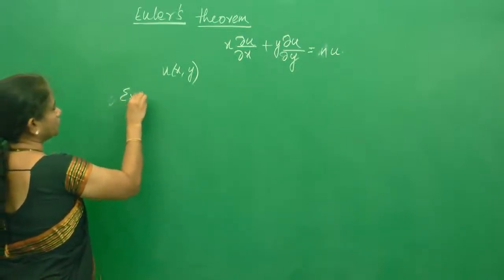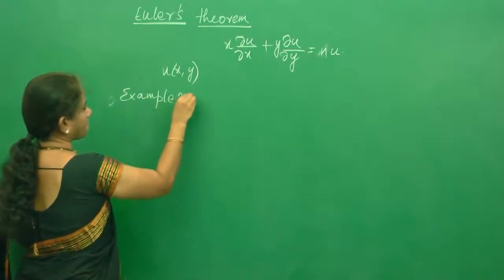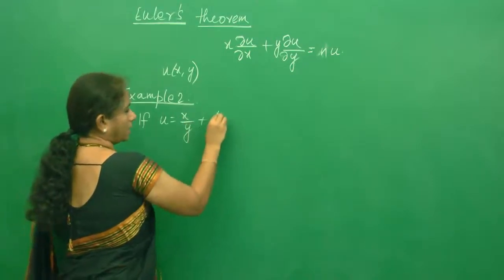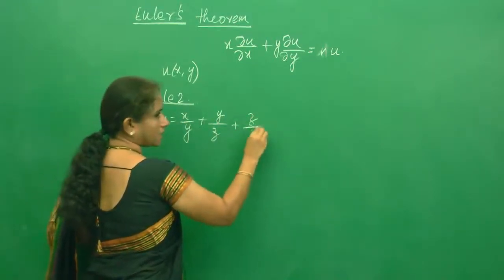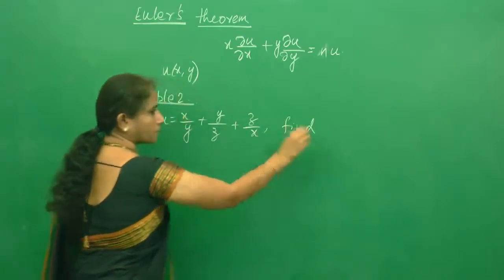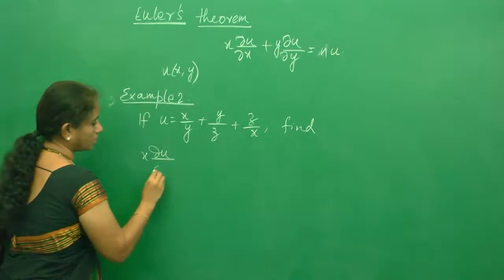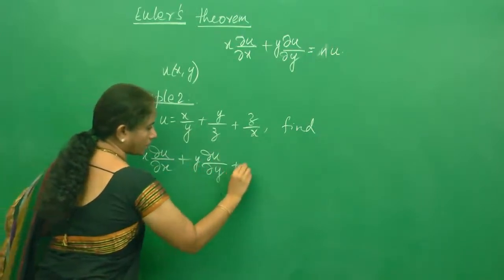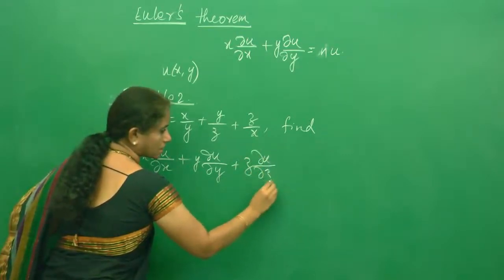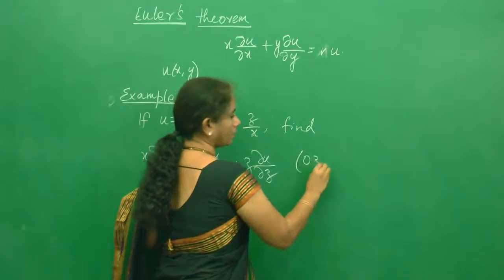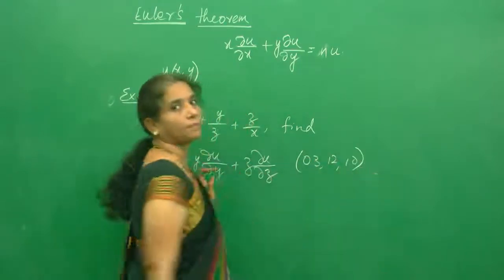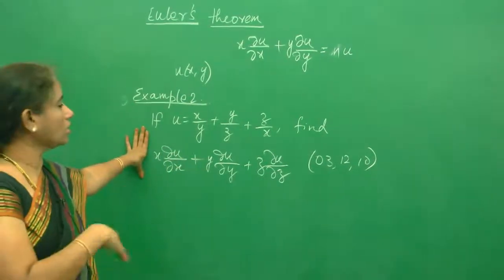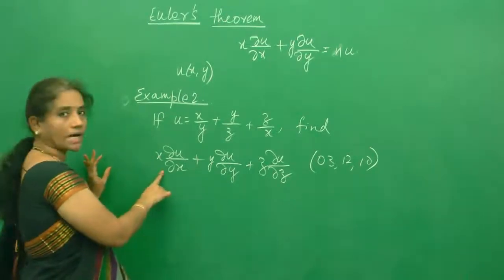Example 2: If u equals x/y plus y/z plus z/x, find x·∂u/∂x plus y·∂u/∂y plus z·∂u/∂z. This has come in 2003, 2012, and 2010. We are going to do this problem using Euler's theorem and also by solving it directly.